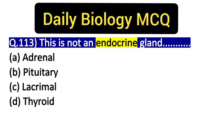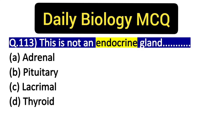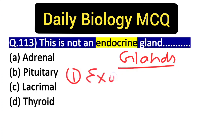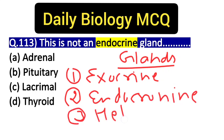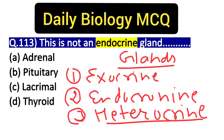Hello everyone, welcome to Arrive Online Classes. This is Praveen here, and today's MCQ for biology is: 'This is not an endocrine gland.' You have to identify the endocrine gland in our body. The three types are: exocrine glands, endocrine glands, and heterocrine glands, which are also called mixed glands.